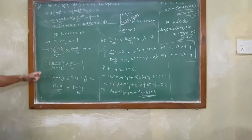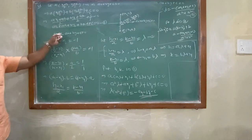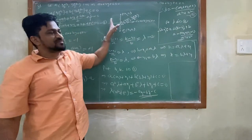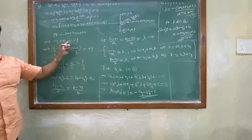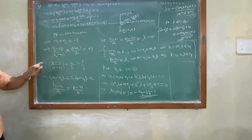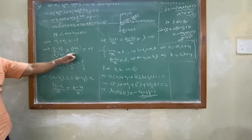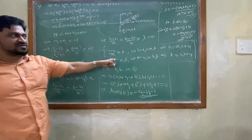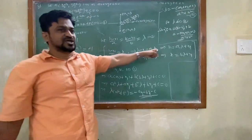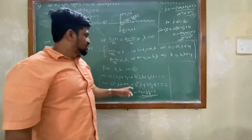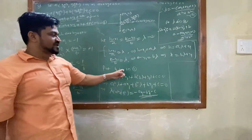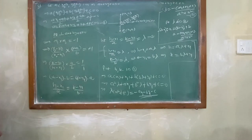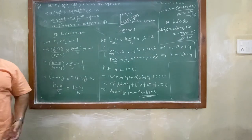Now again, PQ is perpendicular to the line, so m1·m2 = -1. Everything cancels and we equate, getting h and k values. Substitute h and k into equation 1.